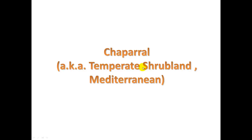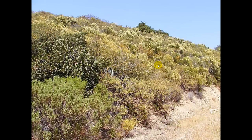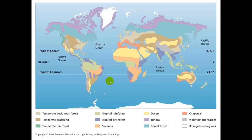Chaparral is also called temperate shrubland or Mediterranean areas. This is where we live in Santa Barbara. If you take a look at the map here, you'll see the little sliver of the North American continent that is Chaparral. The only other place you see this on the planet is around the Mediterranean Sea, for the most part.